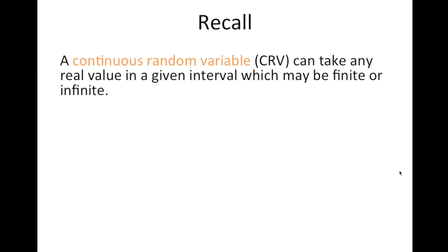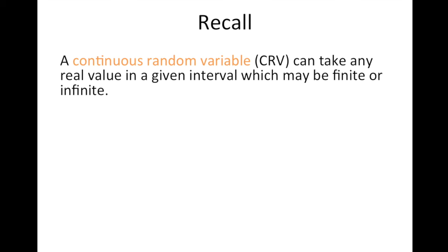Let's recall what a continuous random variable is. A CRV can take any real value in a given interval, which may be finite or infinite. An example of a CRV is weight — there's no such thing as exactly 65 kilograms; your weight can be 65.6567 and so on. So it makes sense that a continuous random variable can take any real value in a given interval.